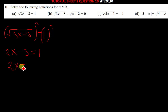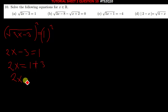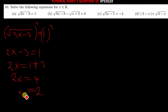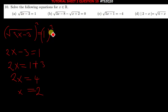After squaring both sides, we have 2x minus 3 equal to 1. The value of x is found by saying 1 plus 3, so 2x equals 4, meaning x equals 2. You can test this: the square root of 4 minus 3 is the square root of 1, which is 1. The solution is correct. Let's move on to part (b).